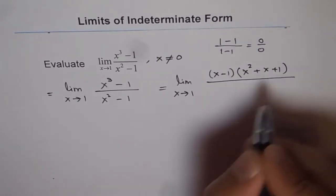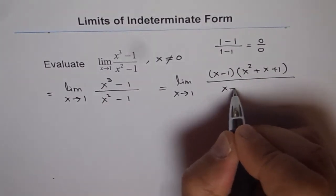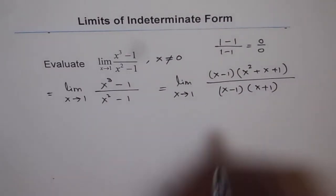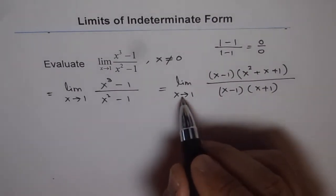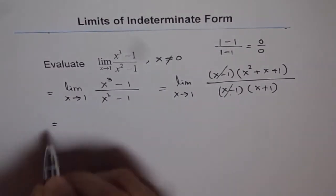And in the denominator, difference of squares. Difference of squares will give us x minus 1 times x plus 1. So that is how we can factor this. And as expected, we do get a factor x minus 1 in both numerator and denominator, which can be cancelled.